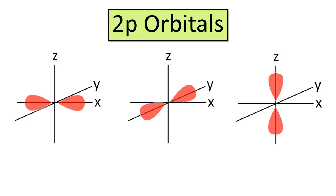Let's take a look at the p orbitals, which exist in the second principal energy level and beyond. Notice that the two p orbitals shown here are not spherically symmetrical like the s orbitals. Instead, each p orbital has two lobes of electron density, one on either side of the nucleus, and a node at the nucleus. The three p orbitals are indistinguishable from one another and only differ in their orientation.